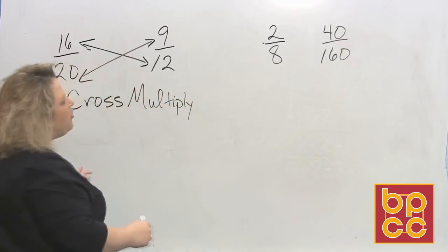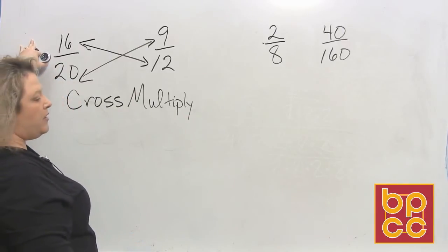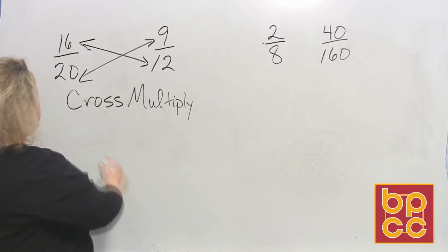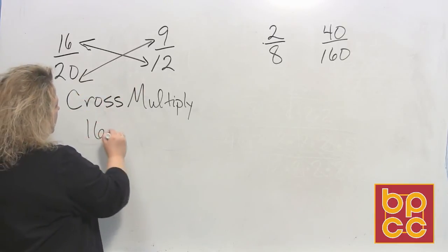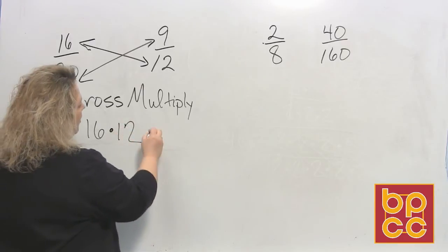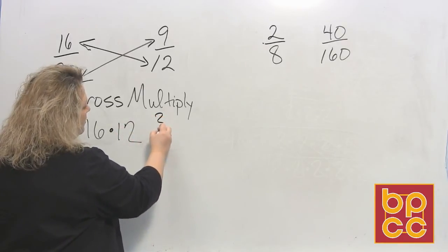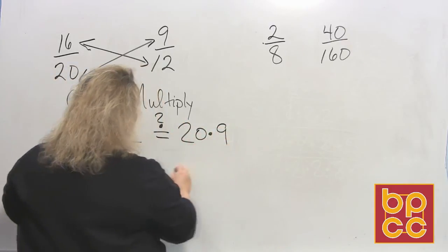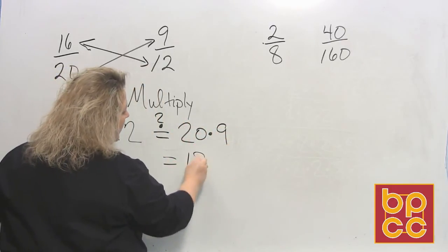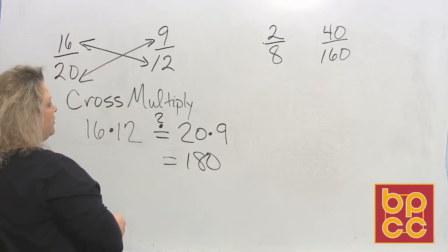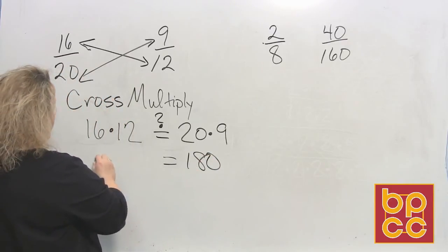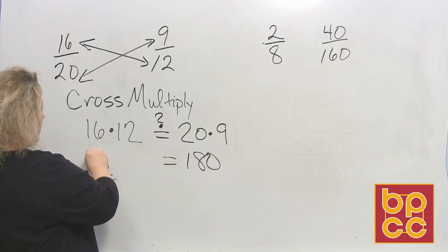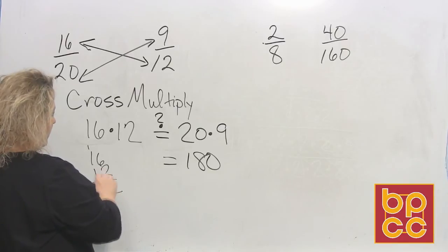Okay, when we cross-multiply, we take the numerator and multiply it by the opposite denominator to see what we get. That would be 16 times 12. And we want to know, are you equal to 20 times 9? Well, 20 times 9 is 180. That one's the easy one to do. And then when you do 16 times 12, you get, do the math. That's from a previous module. So that would be 12. Carry the 1. That would be 3.